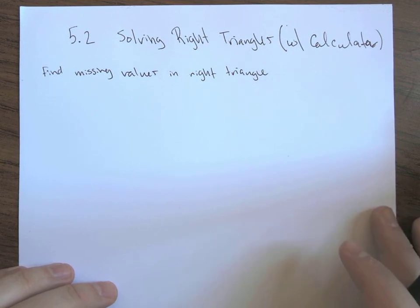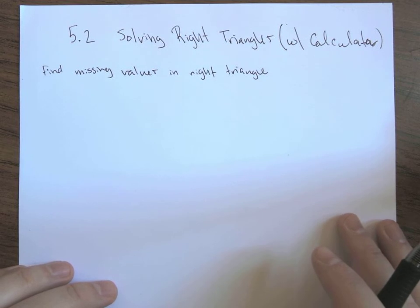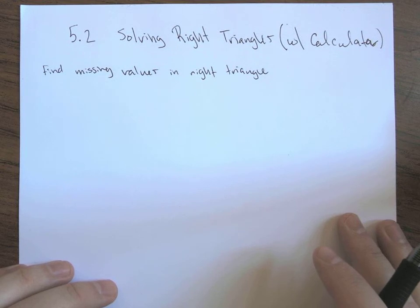The Pythagorean theorem, of course, allows us to get all three side lengths, but it doesn't necessarily tell us anything about the angle values. So we're going to introduce a couple calculator operations to help us fill in the gaps here.